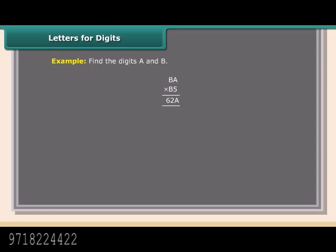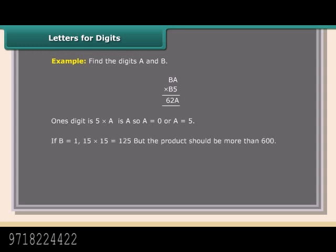Example: Find the digits A and B such that BA × B5 = 62A. The ones digit is 5 × A = A, so A = 0 or A = 5. If B = 1, then 15 × 15 = 125, but the product should be more than 600. If B = 2, then 25 × 25 = 625. Therefore A = 5 and B = 2.